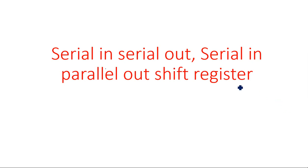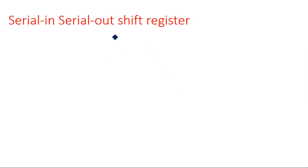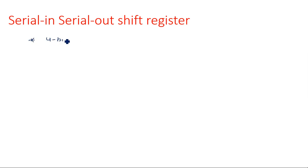In this video I am going to explain serial-in serial-out shift register and serial-in parallel-out shift register. These are very simple and easy. Shift registers are used to transfer data in either the right direction or left direction. The first one is the serial-in serial-out shift register — data enters serially and leaves the register serially. A register is nothing but a group of flip-flops. For example, let us consider a 4-bit shift register.